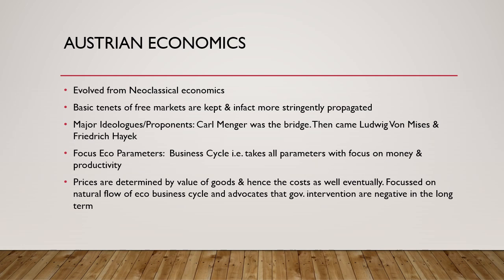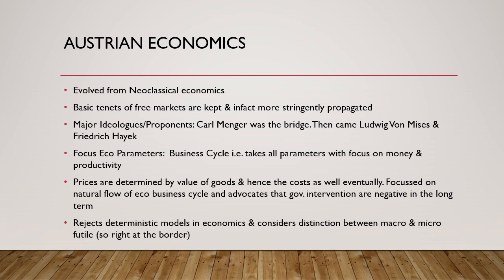According to the Austrian school of thought, the prices of goods are determined by the value given by the consumer, and costs actually flow from that consumer-given value — unlike classical economics, where costs of inputs determine prices, or neoclassical economics, where prices are determined by the equilibrium of supply and demand. The Austrian school also says that government interventions are actually negative to economic growth outcomes. It rejects deterministic models in economics and considers the distinction between micro and macroeconomics as futile.